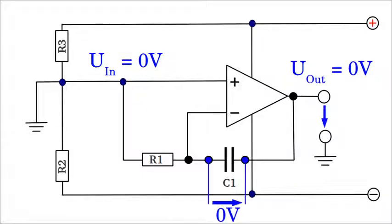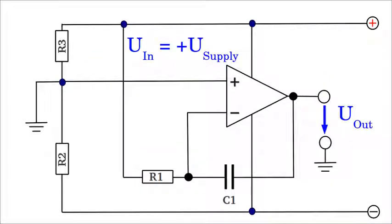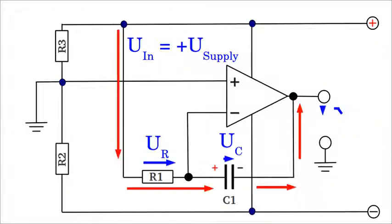Both plates of the capacitor are at the same potential. Furthermore, both sides of the resistor are at the same potential, hence no current is running through the device and the state of the circuit is stable. If the input clamp of the circuit is connected to the positive supply voltage, the capacitor gets charged via resistor 1.